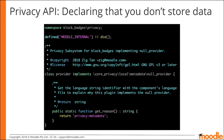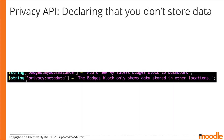Even if you don't store any user data, you need to tell us that you don't store any data. When you do so, you can implement a special metadata interface called a null provider. The null provider just asks that you provide a reason to tell us why you are able to implement it. This is done through use of a language string identifier and a corresponding language string in your plugin's language file.